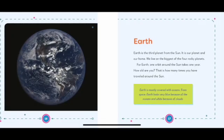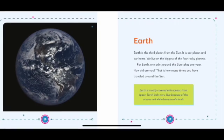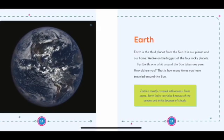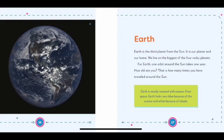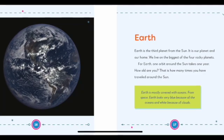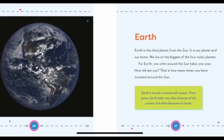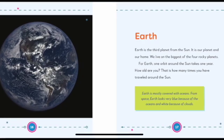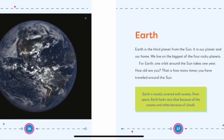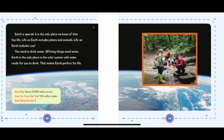Earth is the third planet from the sun. It is our planet and our home. We live on the biggest of the four rocky planets. For Earth, one orbit around the sun takes one year. How old are you? That's how many times you have traveled around the sun. Earth is mostly covered with oceans. From space, Earth looks very blue because of the oceans and white because of clouds. Earth is special. It is the only place we know of that has life. Life on Earth includes plants and animals. Life on Earth includes you.